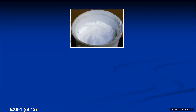In experiment 7b, we are going to learn an experimental technique to determine the percentage of a colored component in a particular mixture. From experiment 7a, a mixture of white potassium nitrate and blue copper sulfate pentahydrate was produced, and we want to determine what percentage is the white potassium nitrate and what percentage is the blue copper sulfate pentahydrate in these crystals.